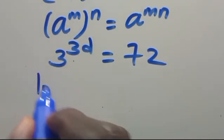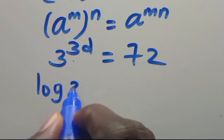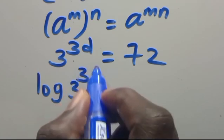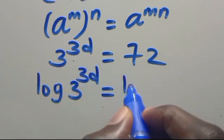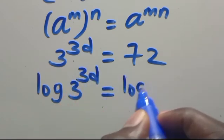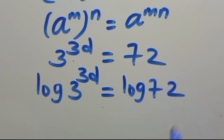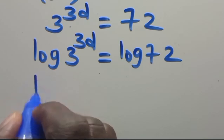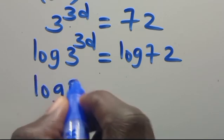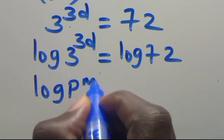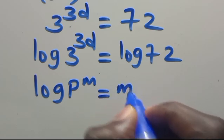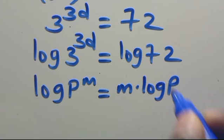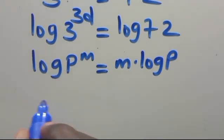From here, let's introduce log to both sides, so we take log of t to the power of 3D equals log 72. Now, recalling that when we have log P to the power of M, this equals M multiplied by log P.